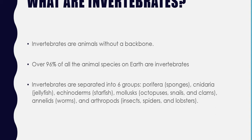We know that there are six groups. Invertebrates are creatures like porifera, which are sponges; cnidaria, which are jellyfish; echinoderms, which are starfish; mollusks, which are octopus, snails, and clams; annelids, which are worms; and arthropods, which are insects, spiders, and lobsters. This week we're going to be focusing mostly on the arthropod group, because it is a very common group with a lot of information, and it's probably the most important one for you to know. You've already learned about mammals, reptiles, birds, fish, and amphibians — so you're going to add arthropods to your list.